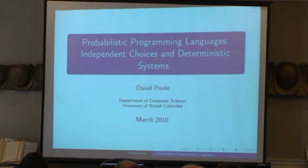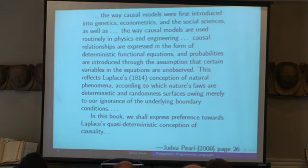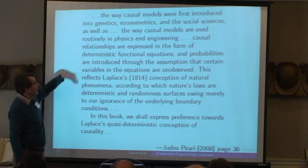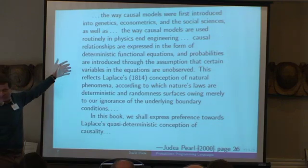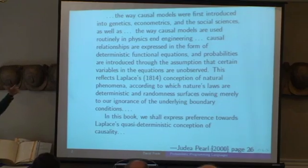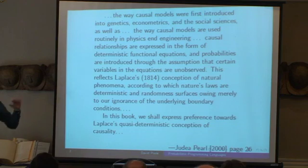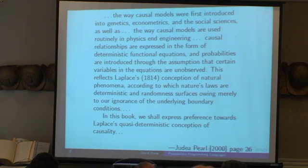What I'm going to argue is that the way to think about probabilistic programming languages is the same way that Judea Pearl argues you should think about causation — we're going to think about them in terms of basically deterministic functional equations. In our case they're going to be programming languages, with probabilities introduced as exogenous inputs to these programming languages. This is what Pearl says is the way to view causal models, and I'm going to see how we can explain the work in programming languages over the last 20 years in terms of this framework.